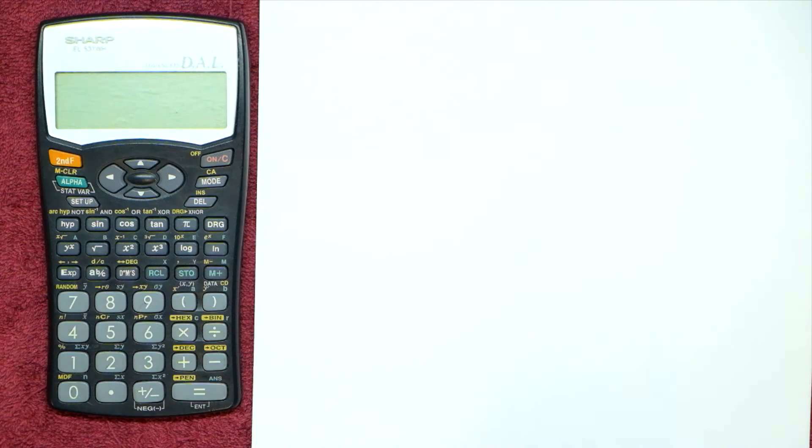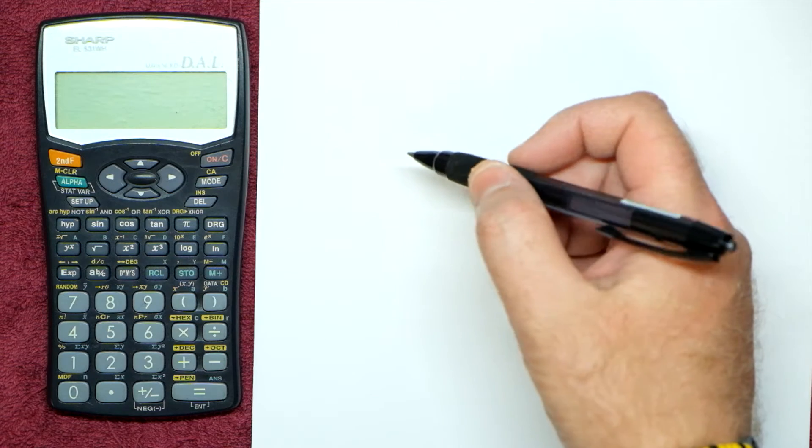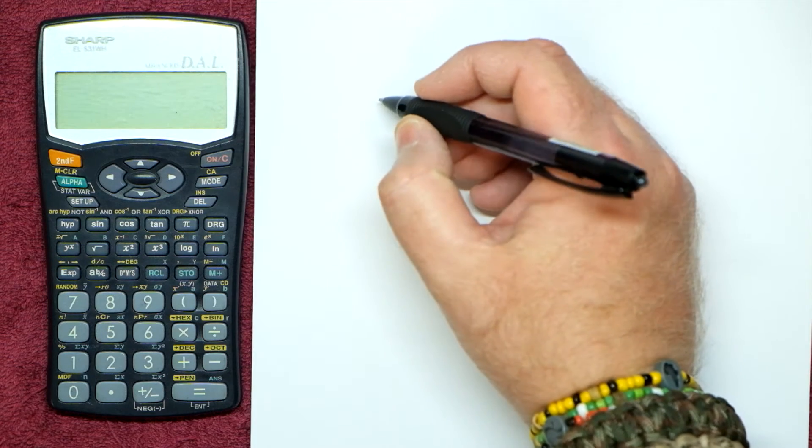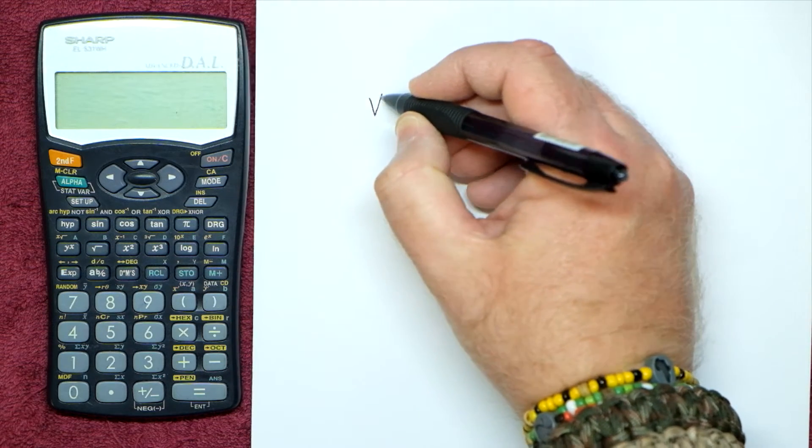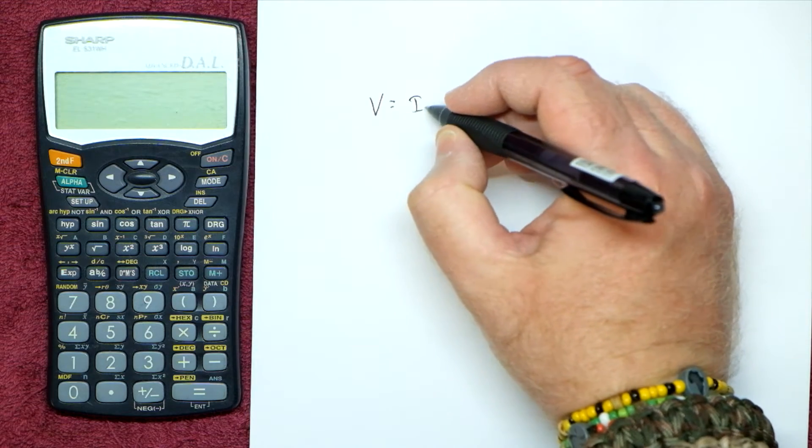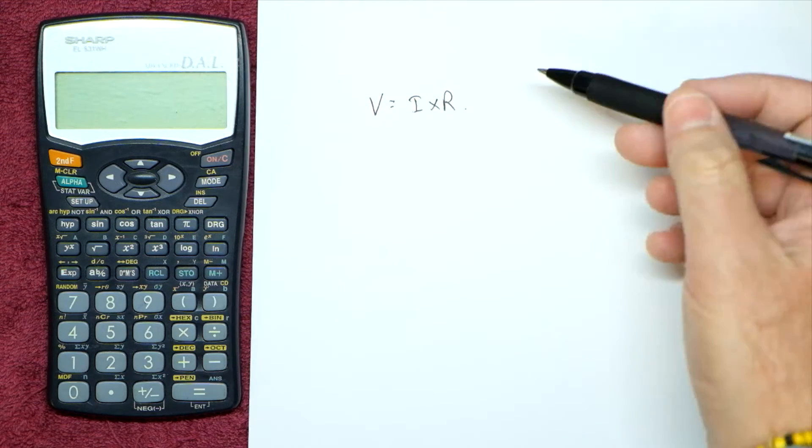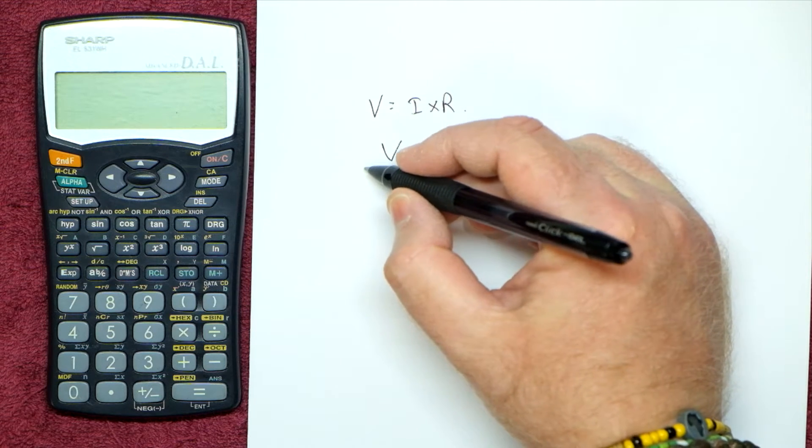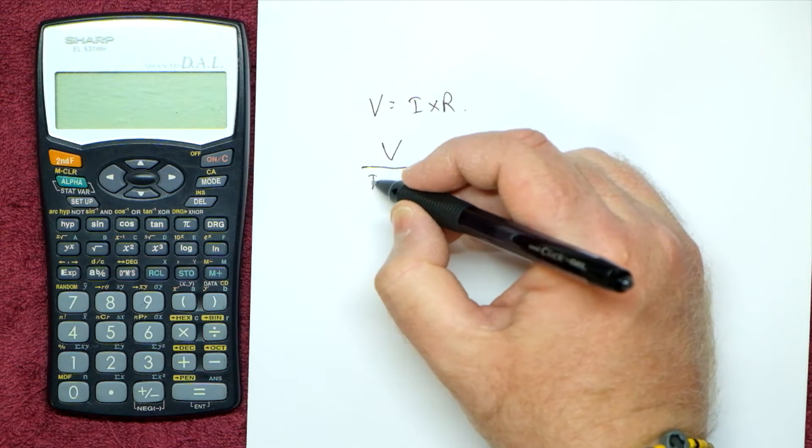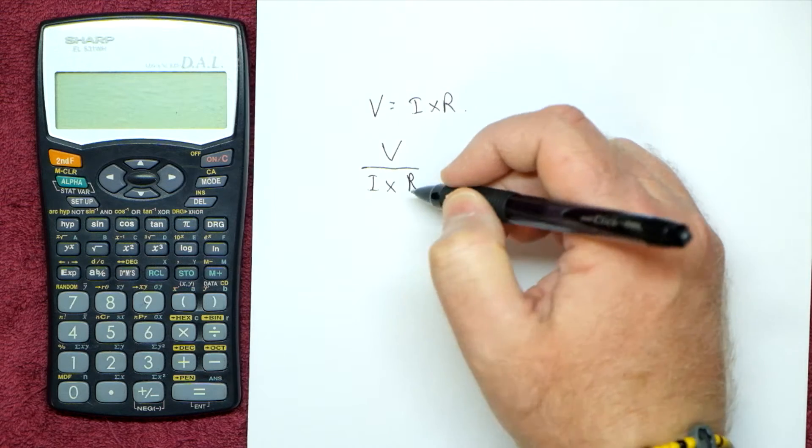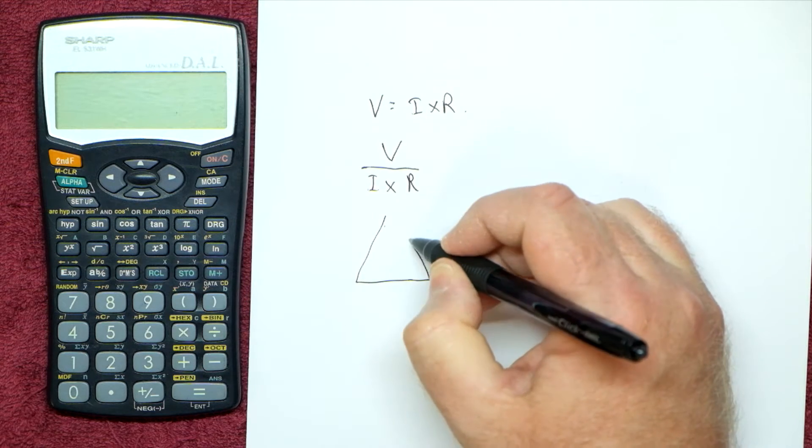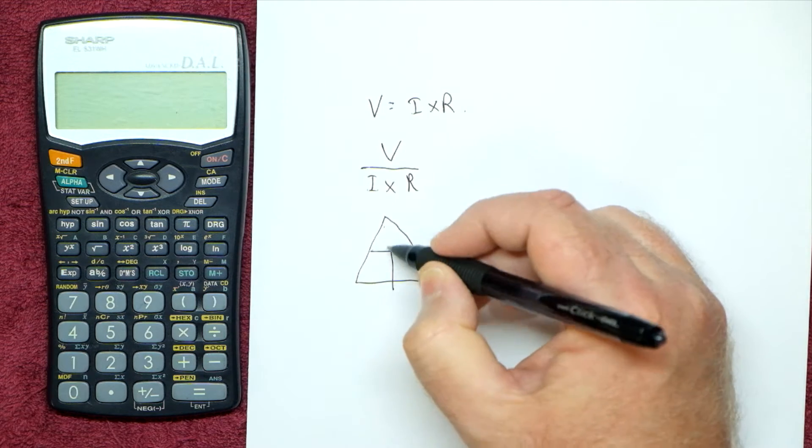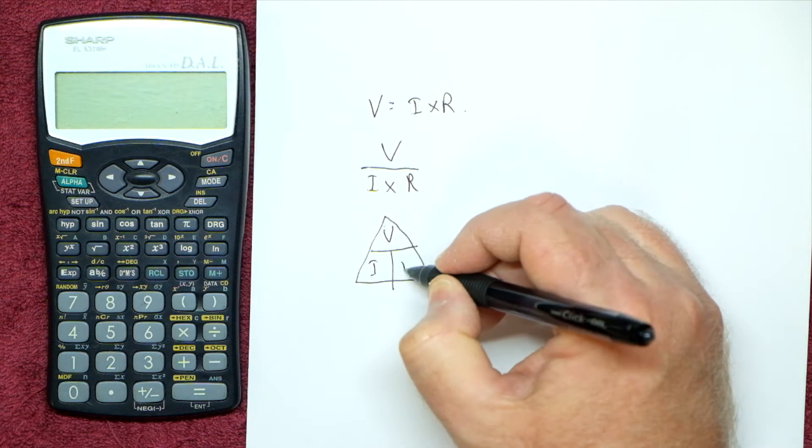Hey guys. So when it comes to Ohm's Law, we need to look at some of the basics. The Ohm's Law formula is V equals I times R. Now they can also be looked at as V over I times R, or in the triangle form that we all know and love: V, I, R.